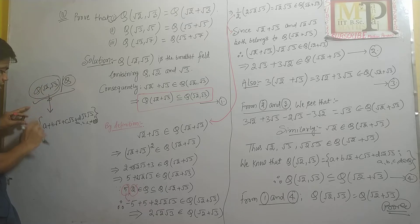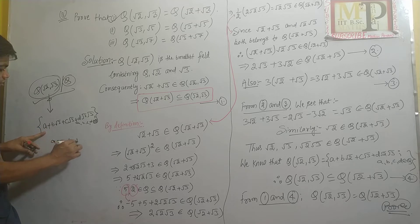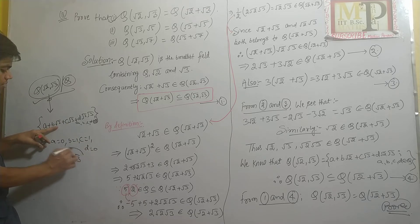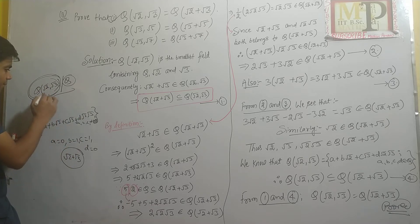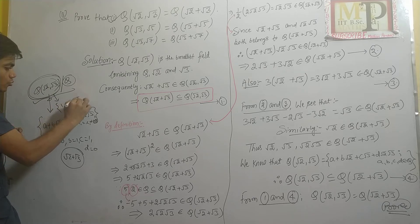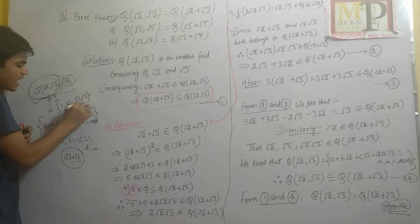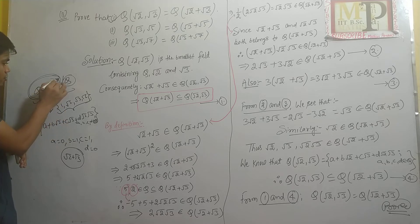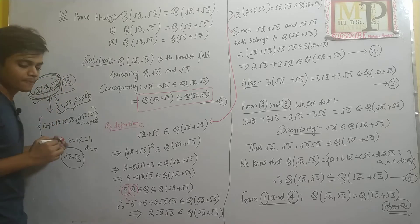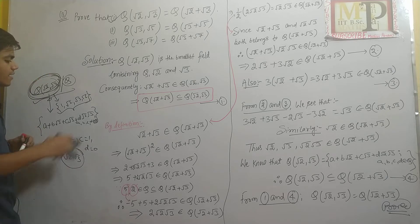Q(√2, √3) के अंदर अगर A=0, B=1, C=1, D=0 लें तो √2 + √3 इसके अंदर आ जाएगा। इसी तरह infinitely many elements होंगे। Q(√2, √3) over Q का basis है {1, √2, √3, √6} — ये चारों elements rational के साथ मिलकर infinitely many elements generate करेंगे।